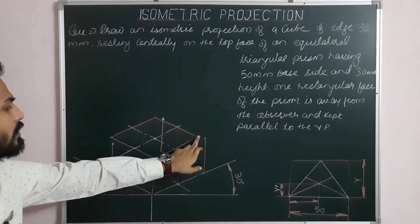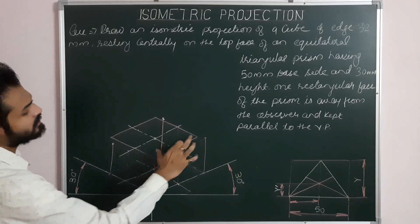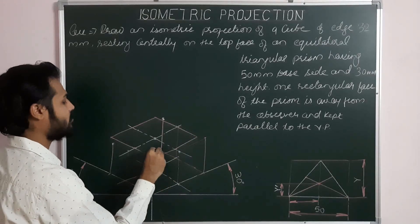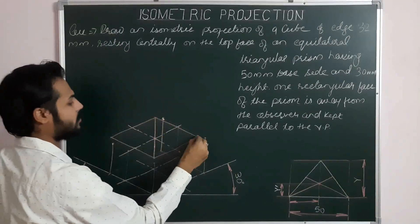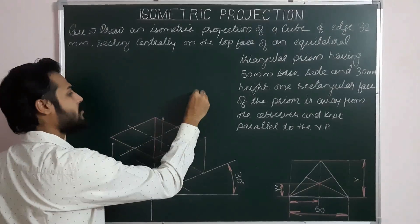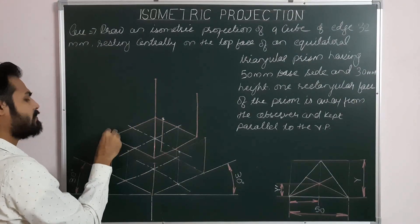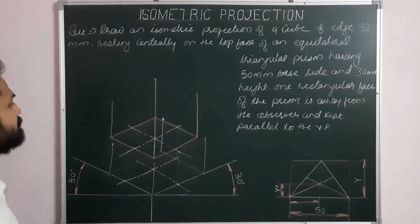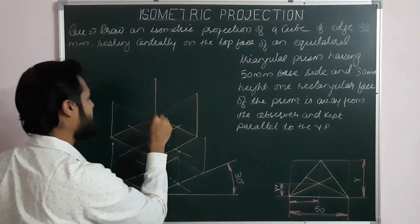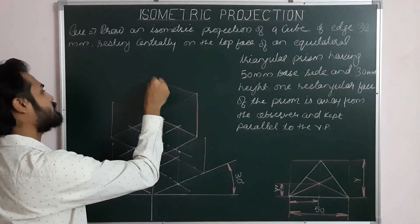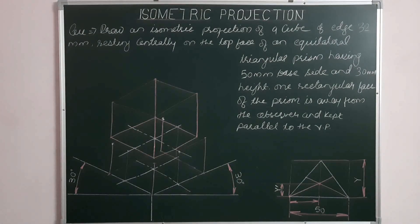From all four corners of the cube's base, we draw lines parallel to the third ISO axis for the height. The side length is 32, so we take ISO 32 for each corner: first ISO 32, second ISO 32, third ISO 32, and fourth ISO 32. We then join all the top corners, completing the final isometric projection of the combination.